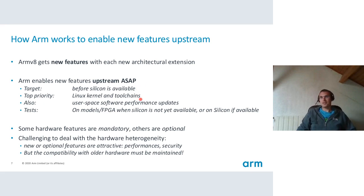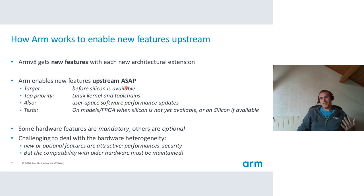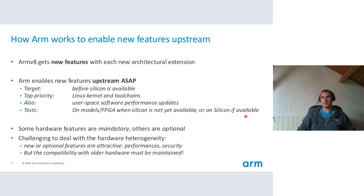The top priorities inside ARM for upstream work are the Linux kernel and toolchain, but we also take care about userspace software performance updates — for example for TensorFlow or other userspace software. We try to enable these things before silicon is available, so we cannot test on real hardware. Most of our tests are on models, which are kind of emulators, and also on FPGA. But as soon as silicon is available, we also test on real hardware to make sure everything is fine and performance is great.